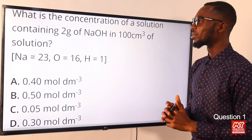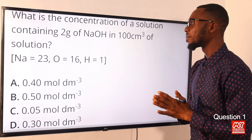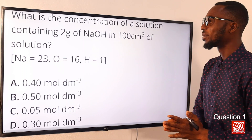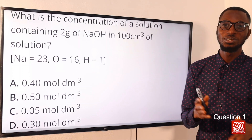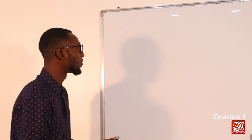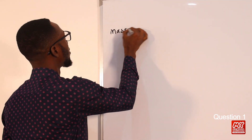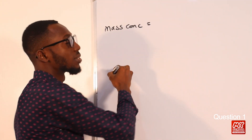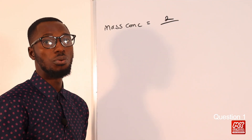What is the concentration of a solution containing 2 grams of sodium hydroxide in 100 cm³ of solution? Some may decide to use the relationship between molar mass, mass, and mole — remember that molar mass is mass over mole. But I have decided to use the formula for mass concentration, which equals the mass of the solute, which is 2, over the volume.